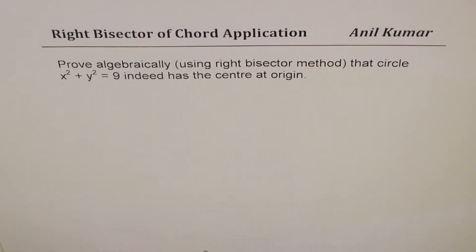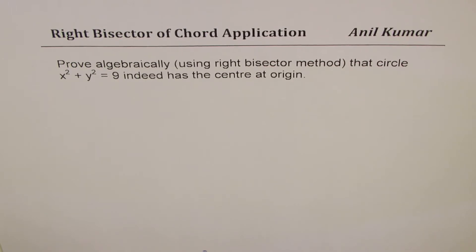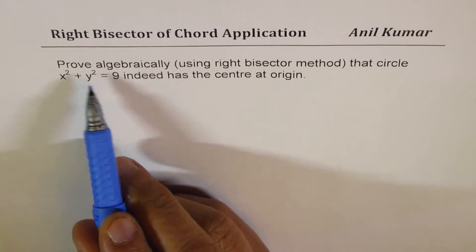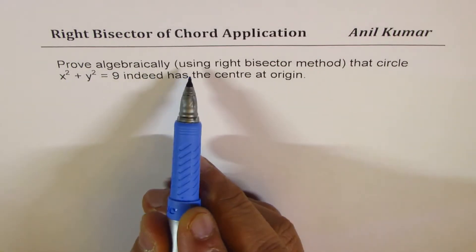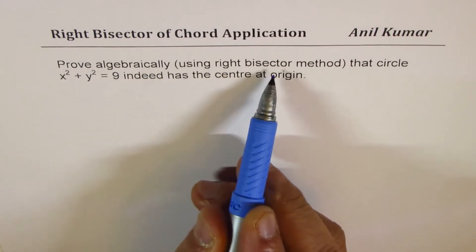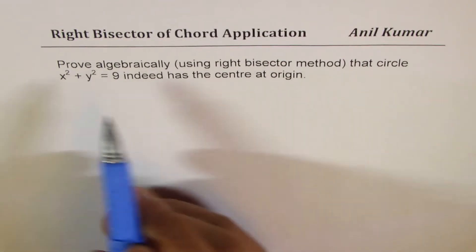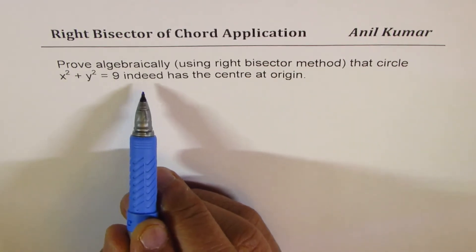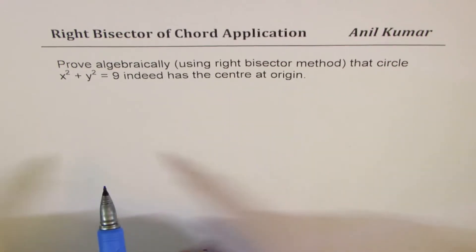I am Anil Kumar sharing with you a question from my subscriber, and I hope its solution is going to benefit many of you. It is based on the right bisector of a chord. The question is: prove algebraically using the right bisector method that the circle x² + y² = 9 indeed has its center at the origin.